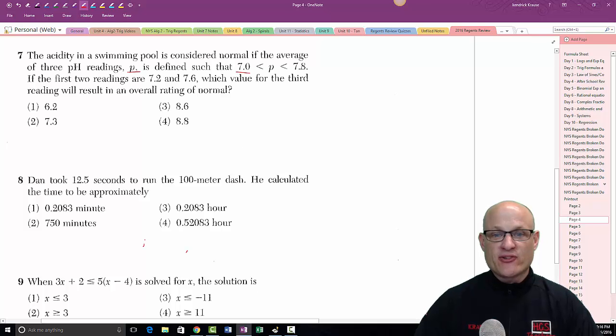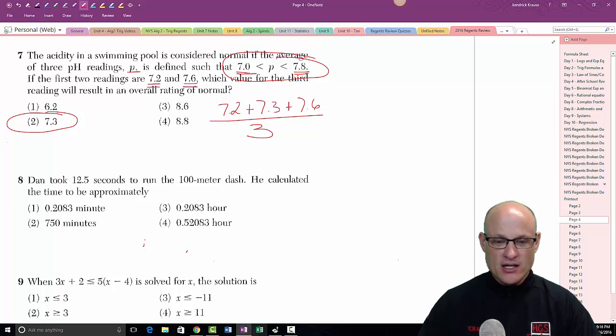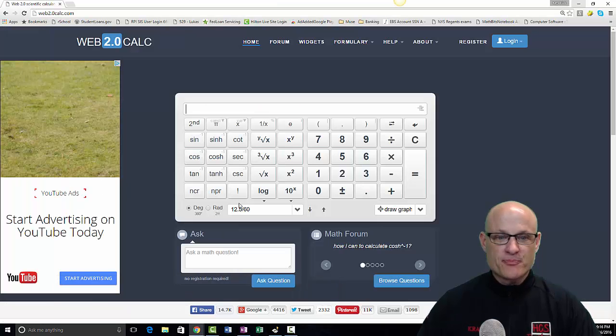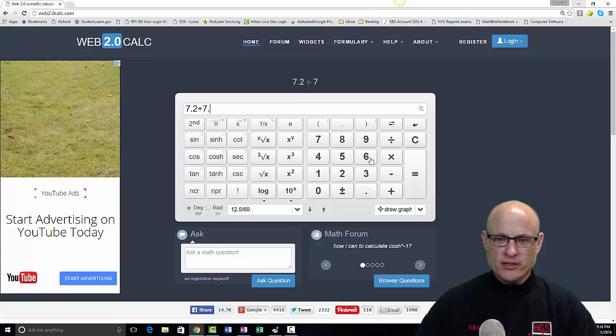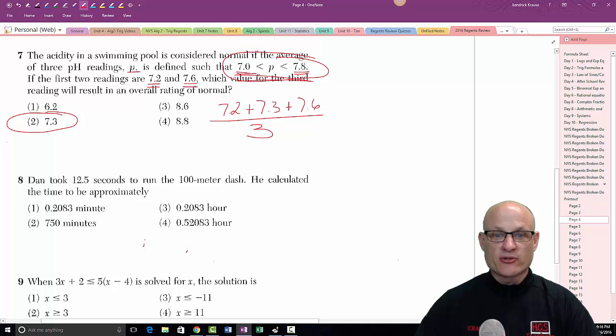The acidity of a swimming pool is considered normal if the average pH rating P is between 7 and 7.8. So if the first two readings are 7.2 and 7.6, which value of the third would keep it in this range? Well, it should be relatively obvious - it's this one. If you take 7.2 and you add 7.3 and you add 7.6 and divide by three, it should be in that range. Let me grab my broken calculator here. So all those numbers - 7.2 plus 7.6 plus that first answer which is 7.3, I hit enter and then I divide by three. I get 7.34 or 7.36, and that would be in between here. So that's just the correct answer.